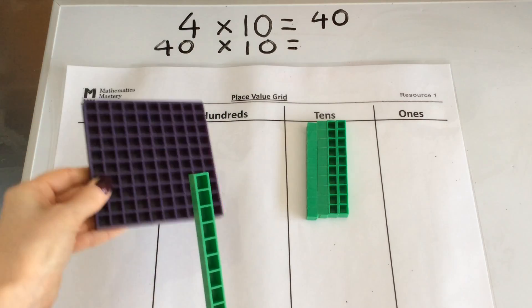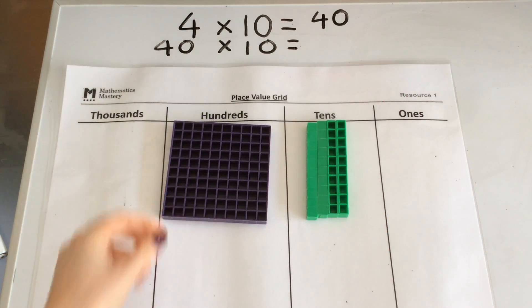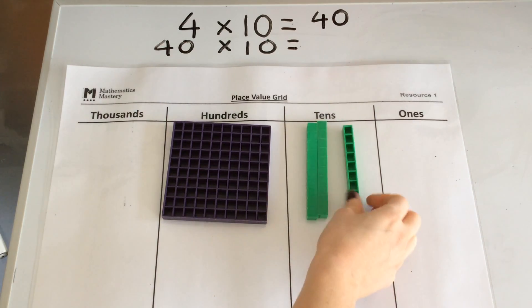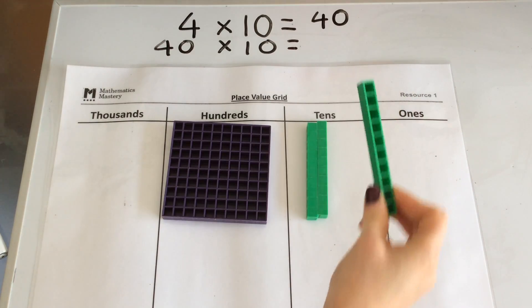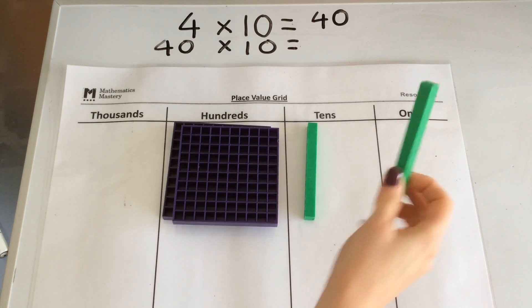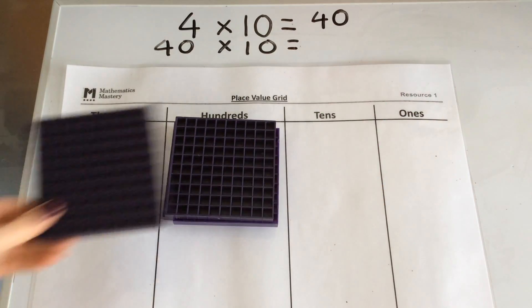Therefore to make this 10 times greater I could exchange one of my 10s for 100. To make it 10 times greater I know that 10 times greater than 10 is another 100. 10 times greater than 10 is another 100. And 10 times greater than 10 is another 100.